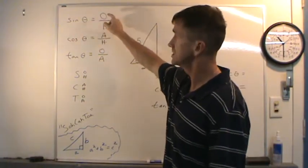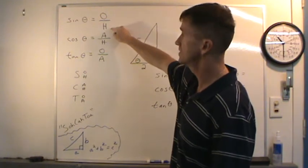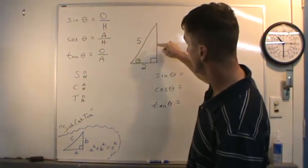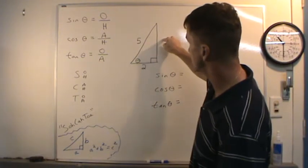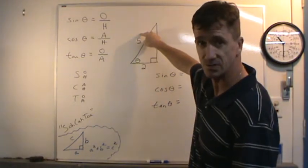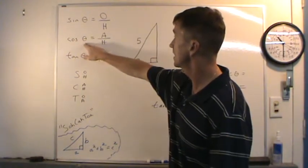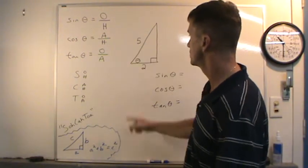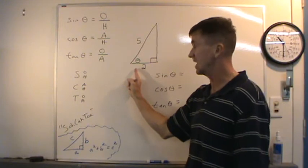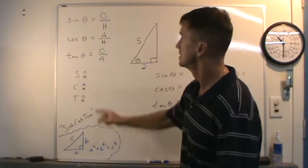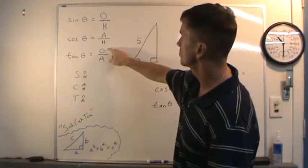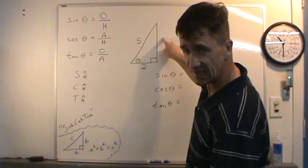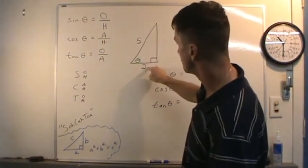Sine of theta is the ratio of the opposite side to the hypotenuse — the opposite side of theta being this side right here, with 5 being the hypotenuse of the right triangle. Cosine theta is the ratio of the adjacent side over the hypotenuse, this being the adjacent side to angle theta. And tangent of theta is the ratio of the opposite side over adjacent — this being the opposite side, this being the adjacent.